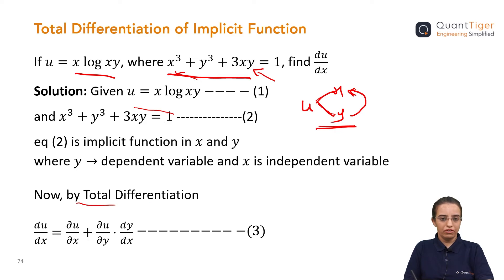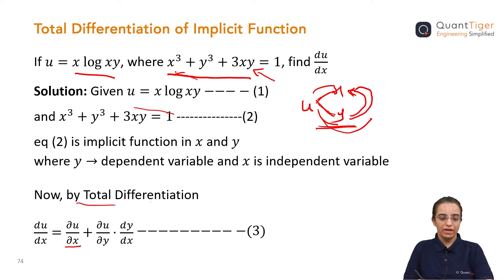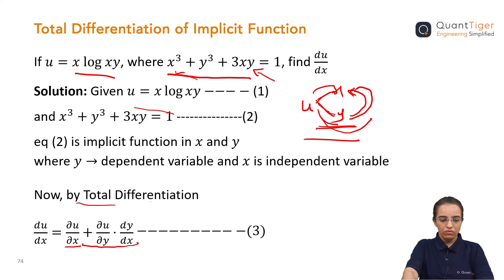We need to find du/dx. From u to x: since u is a function of both x and y, we use the del operator — ∂u/∂x. Then from u to y: ∂u/∂y, and from y to x: dy/dx. So the total differentiation formula becomes: du/dx = ∂u/∂x + (∂u/∂y)·(dy/dx). This is equation three — it is very important to understand this equation.